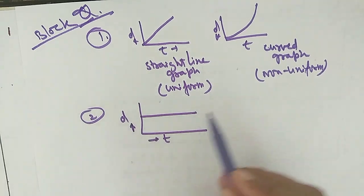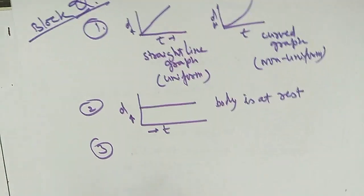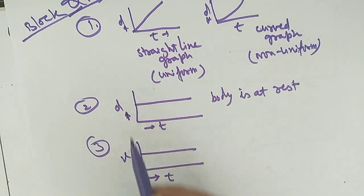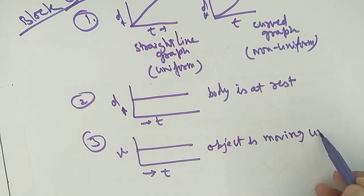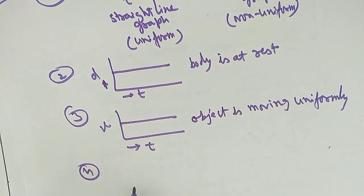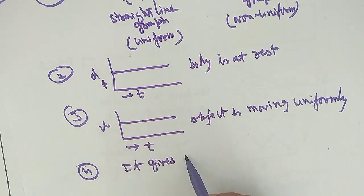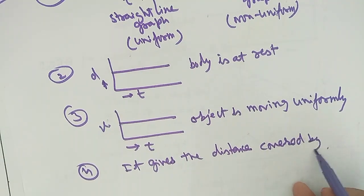Third question: What can you say about the motion of an object whose speed-time graph is a straight horizontal line? It represents that the body is moving with constant speed — the object is moving uniformly. Fourth question: What quantity is measured by the area occupied under the speed-time graph? Finding the area under the VT graph gives the distance covered by the object.